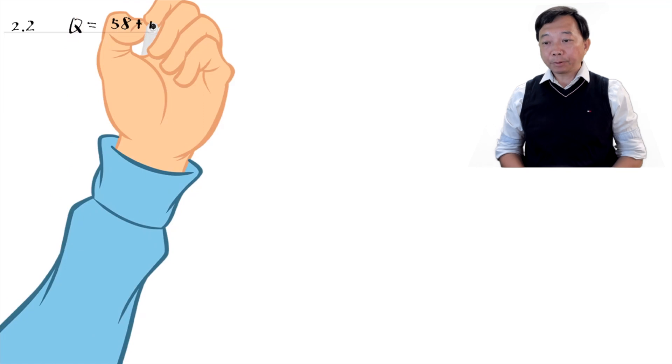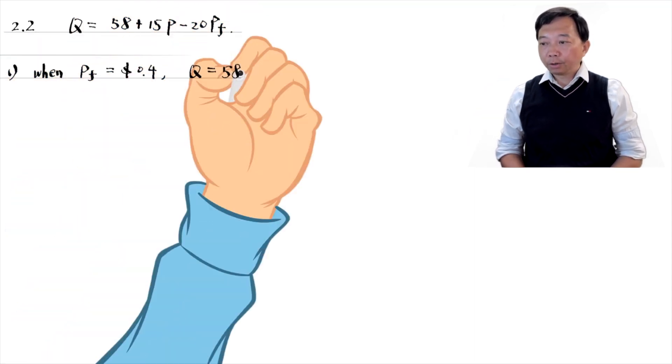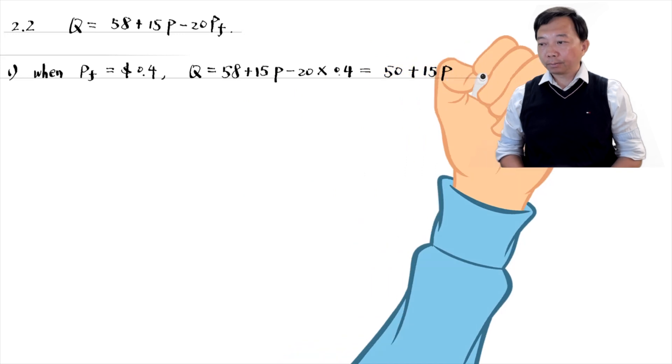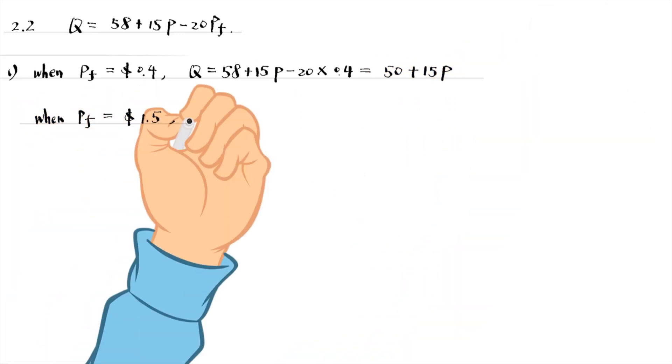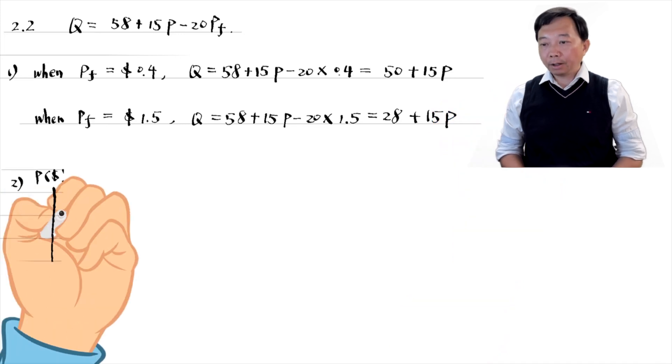First, we substitute the fertilizer prices into the equation to find the supply functions. Second, we draw the supply curves.